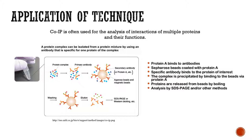Co-IP is a powerful technique used regularly by molecular biologists to analyze protein-protein interactions. A protein complex can be isolated from a protein mixture using an antibody specific for one protein of the complex — hence the Co-IP technique. To perform Co-IP, the antibody against a target protein is first coupled to sepharose beads through Protein A. Then the complexes containing the target protein are immunoprecipitated with the antibody-coupled beads by centrifugation. Protein components in the complexes are then visualized by immunoblotting using antibodies specific to the different components.